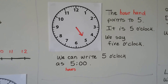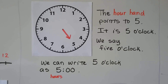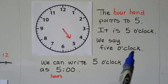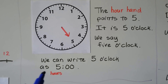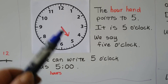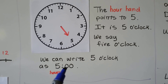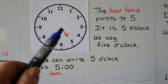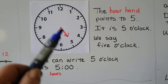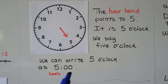The hour hand points to five — it is five o'clock. We can also write five o'clock as a five for the hours, with a colon — that's two little dots — and a zero zero. That would be the minutes, but we're just using the hour hand. We write five o'clock.